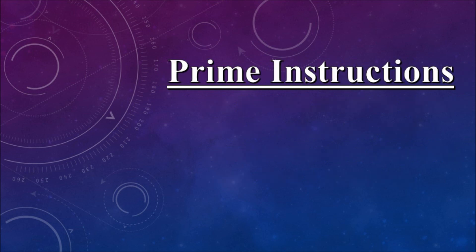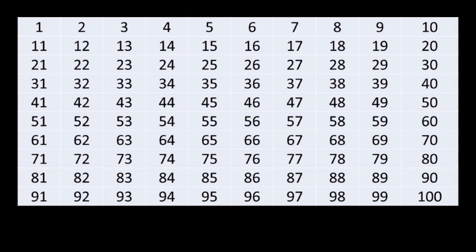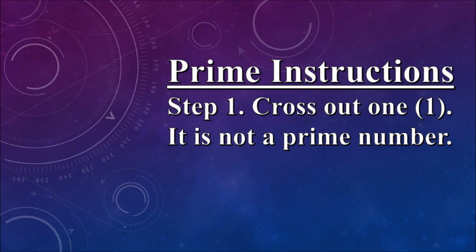Now, how do we identify prime numbers? We begin with the chart of natural numbers from 1 to 100. Step 1, cross out the number 1, it is not a prime number.